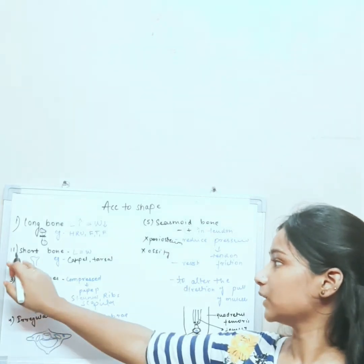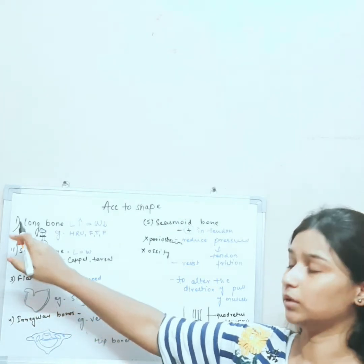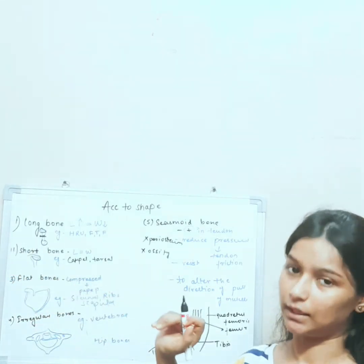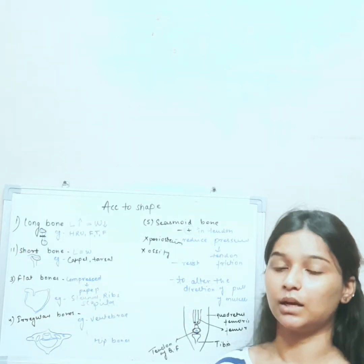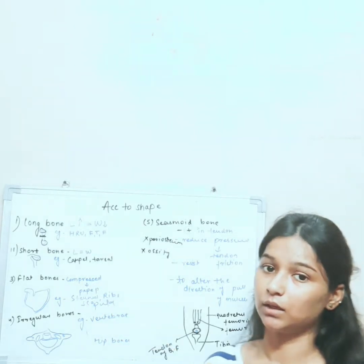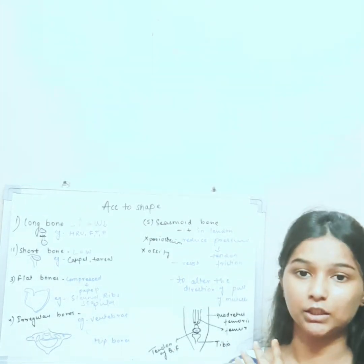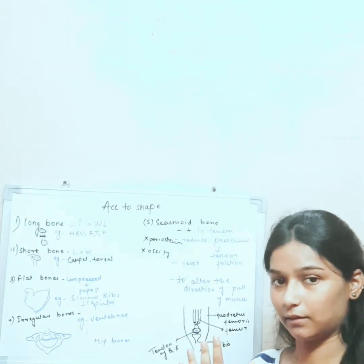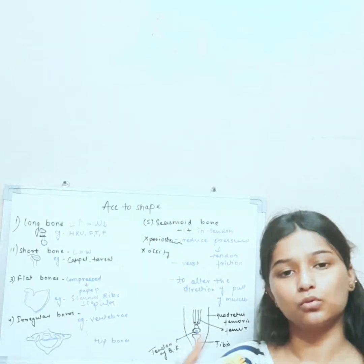In short bones, there will be only one epiphysis — that is, only one extended end — and one diaphysis, that is the shaft. Examples of short bones are carpals and tarsals. Carpals are the bones of our wrist, while tarsals are the bones of our ankle. If you touch here, you will see it has only one extended end and one diaphysis.